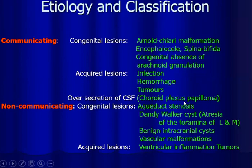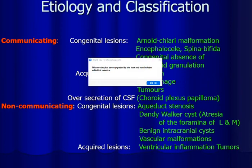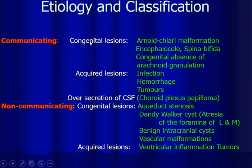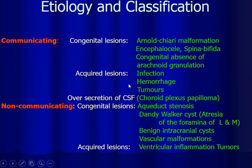Etiology and classification: hydrocephalus can be communicating or non-communicating. Communicating means there is no obstruction in the CSF pathway, i.e., the lesion is not in the aqueduct of Sylvius. Communicating hydrocephalus can be due to congenital lesions like Arnold-Chiari malformation or encephalocele, or associated with spina bifida, or congenital absence of arachnoid granulations where CSF cannot be absorbed. It can also be due to acquired lesions like infection, hemorrhage, or tumors, or over-secretion of CSF such as in choroid plexus papilloma.